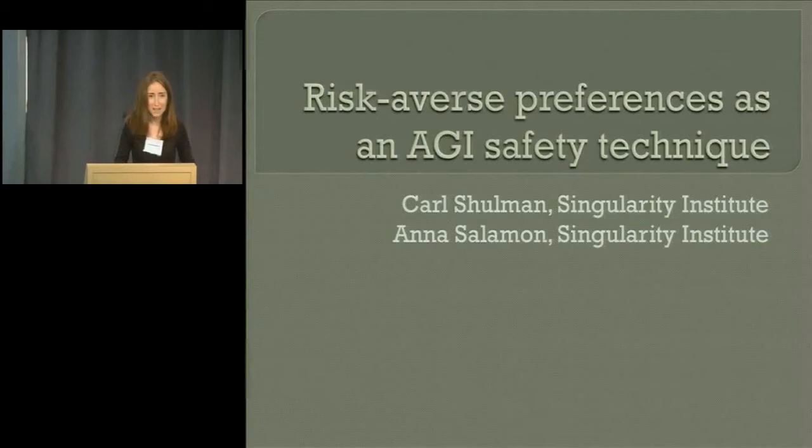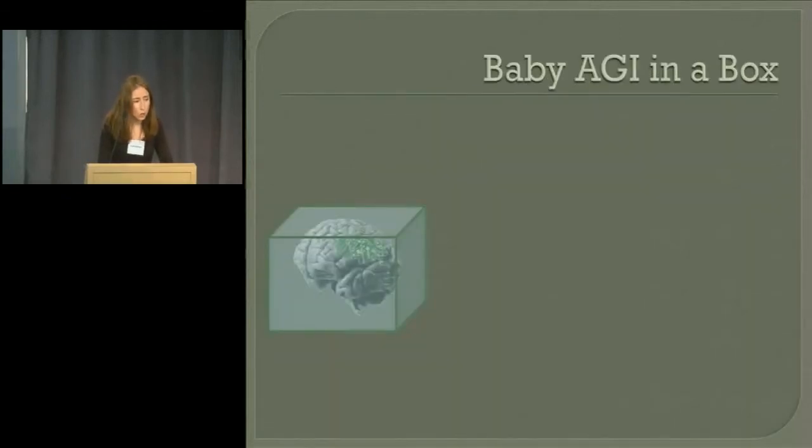Next up, we have me again on risk-averse preferences as an AGI safety technique, a second shot at how to make it safely through the singularity. This is also joint work with Carl, mostly his. So we'll start off with a toy thought experiment and then step back and talk about where it came from.